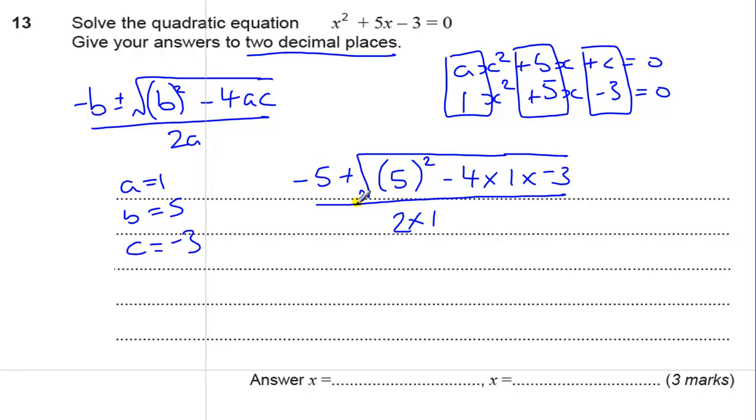To get this fraction line, if you've got a new calculator, you've got this version of the fraction. If you press that first, then you can type that top line in. And then use your arrows to get down to the bottom and type the 2 times 1 in or just 2 on the bottom.